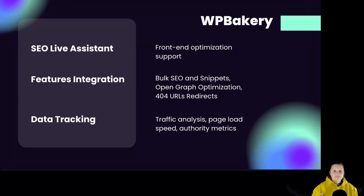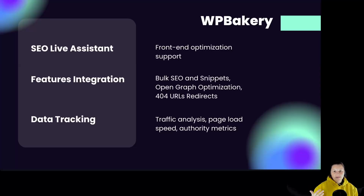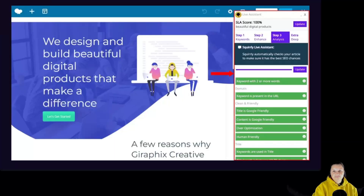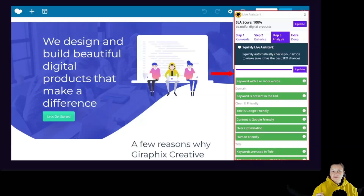For WordPress Bakery, front-end optimization is supported with the help of the SEO live assistant. Features include bulk SEO, snippets, open graph optimization, 404 URL redirects, data tracking, traffic analysis, page load speed, and authority metrics. WordPress Bakery users can utilize Squarly SEO's front-end optimization capabilities to enhance their content. The integration supports bulk SEO tasks and provides detailed insights into page performance and SEO metrics.